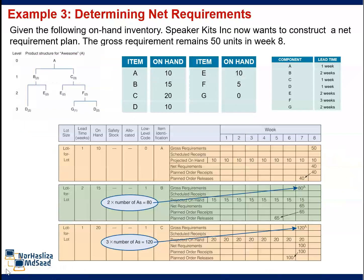In today's lesson, we are going to take a look at Example 3: Determining Net Requirement. Speaker Kids Incorporation developed a product structure for a bill of material in Example 1, and Example 2 developed a gross requirements plan. Given the following on-hand inventory, Speaker Kids Incorporation now wants to construct a net requirements plan. The gross requirement remains 50 units in week 8, and component requirements are assumed in the product structure in Example 1.